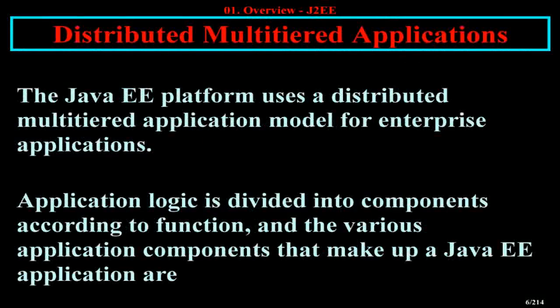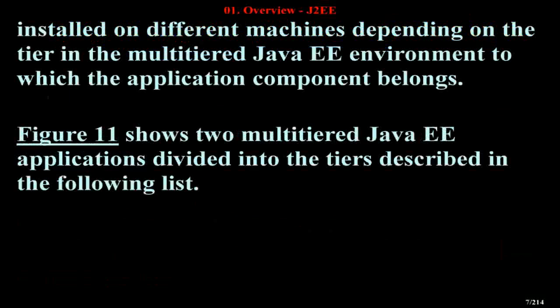The Java EE Platform uses a distributed multi-tiered application model for enterprise applications. Application logic is divided into components according to function, and the various application components that make up a Java EE application are installed on different machines depending on the tier in the multi-tiered Java EE environment to which the application component belongs.